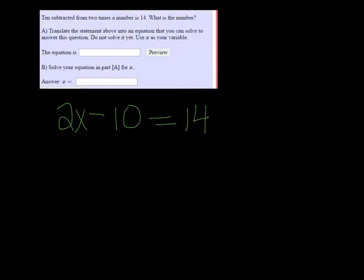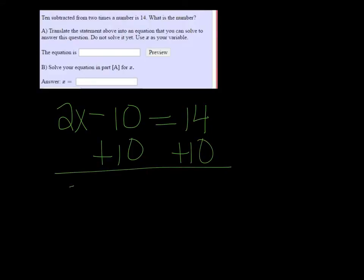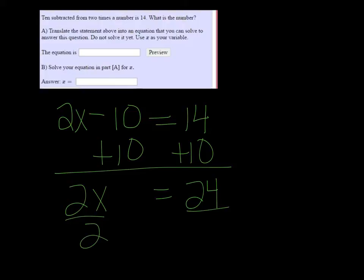So this is the equation, and then to solve it, I'll add 10 to both sides. So 2x is equal to 24. Dividing both sides by 2, we get that x is equal to 12.